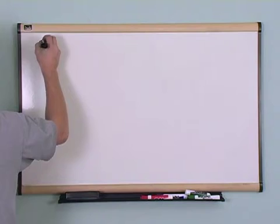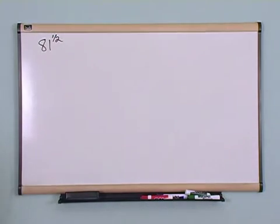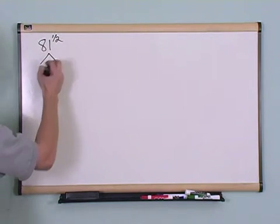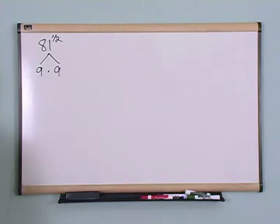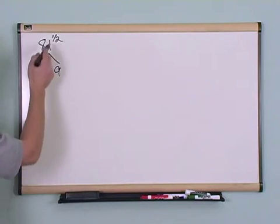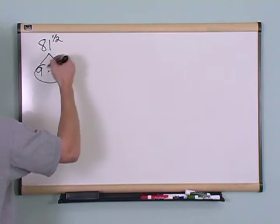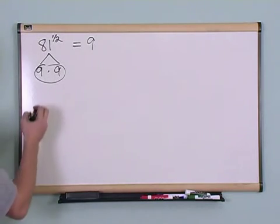What if you have a problem that's like 81 to the one-half power? How would you work that? Well, once you remember that this is just a square root symbol, then you do this just like before. Nine times nine is 81. So I'm looking for a pair because this is a square root. Here's my pair. So I pull the nine out. This just equals nine. Simple. It's the same kind of problem that we were doing before.